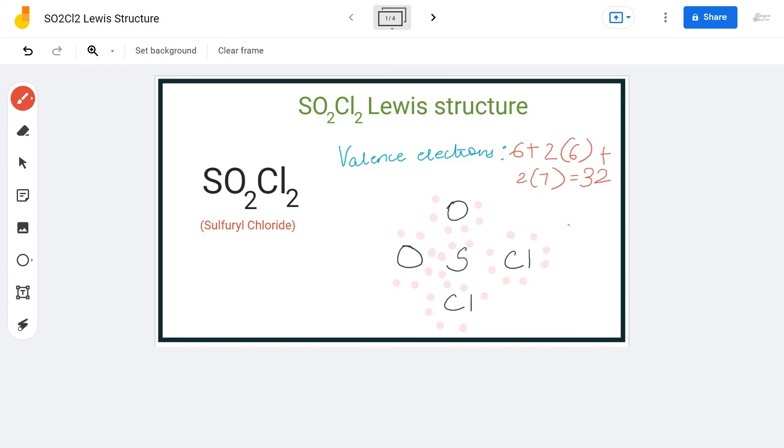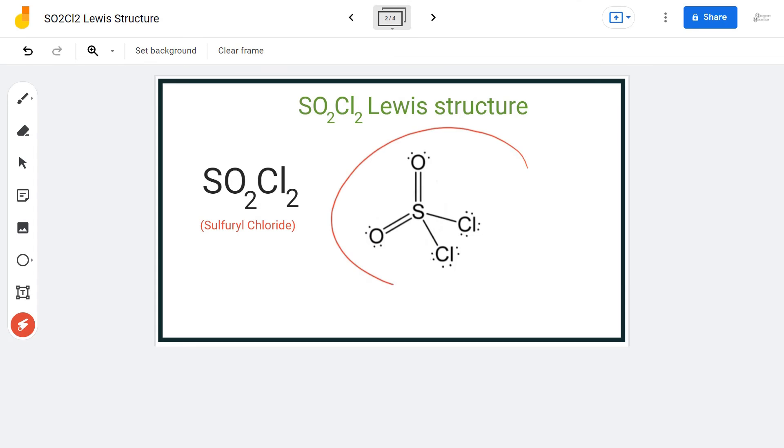So by shifting a pair of electrons from both these oxygen atoms we will be fine with sulfur, as it can have expanded octets. This will result in a double bond formed between both these oxygen and sulfur atoms. And hence now this is the Lewis structure of SO2Cl2.